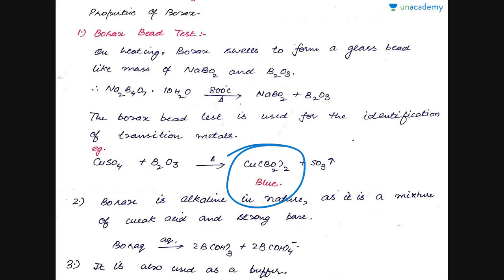Next important application is that it is alkaline in nature. The aqueous solution of borax gives B(OH)3, that is boric acid, plus B(OH)4-. Due to the presence of this negatively charged boron tetrahydroxy species, it is alkaline in nature.